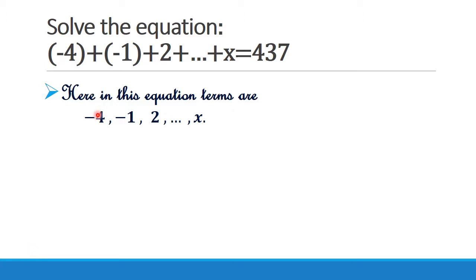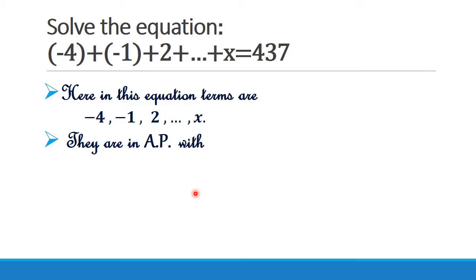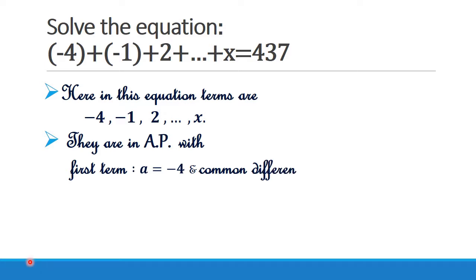That is, minus 4 plus 3 gives minus 1, minus 1 plus 3 gives 2, and so on. Hence they are in AP with first term a equal to minus 4, common difference d equal to 3, and the last term equal to x.